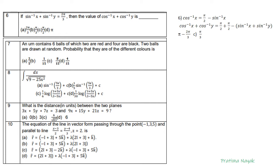Question number 7: an urn contains 6 balls, 2 red and 4 black; 2 balls are drawn at random. The probability that they are of different colors is either (first ball red, second ball black) or (first ball black, second ball red): (2/6)(4/5) + (4/6)(2/5) = 8/30 + 8/30 = 8/15. The answer is C.